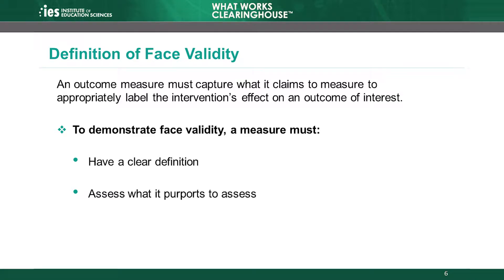First, let's examine the concept of face validity. An outcome measure must capture what it claims to measure for the study to appropriately label the intervention's effect on an outcome of interest. The WWC says that an outcome measure has face validity when it has a clear definition and captures what it claims to measure.